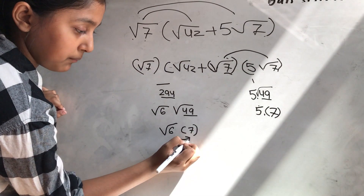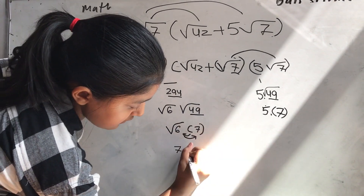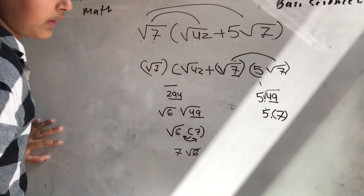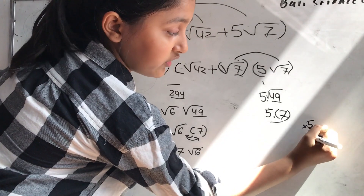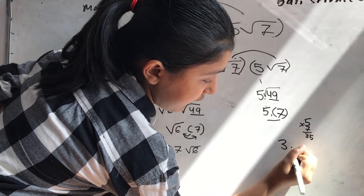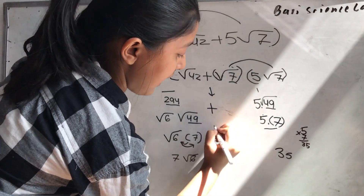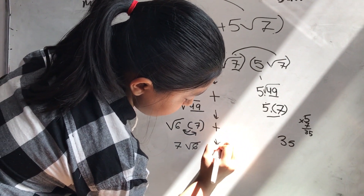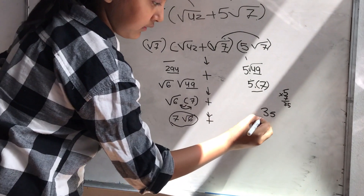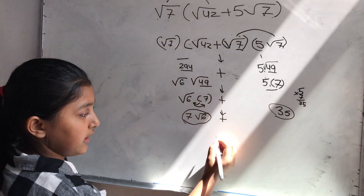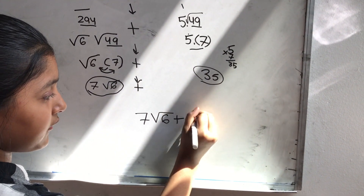Then you have to swap them. You do 7 root 6. Here you have to do 5 times 7 which is 35. One mistake I made is here — you have to bring down the plus sign. Here's my answer: plus 35. So the final answer is 7 root 6 plus 35.